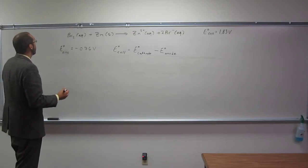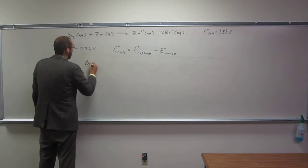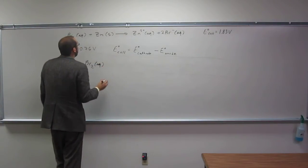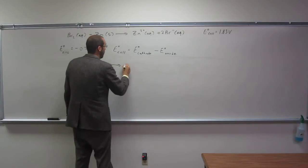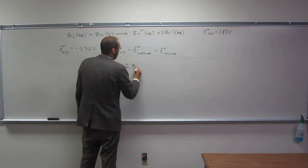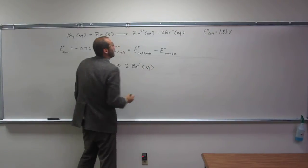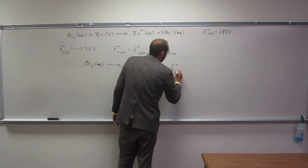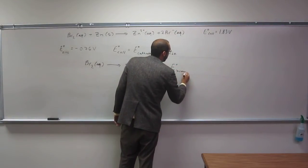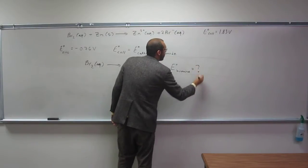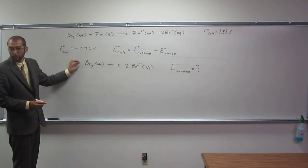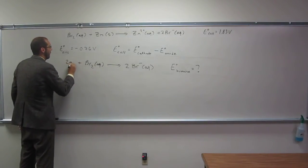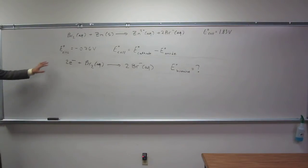So we've got Br2 aqueous to Br- aqueous. This is going to be the standard potential of bromine, and that's what we're looking for. And here we're going to have to add those two electrons, right? So now our charge is balanced.